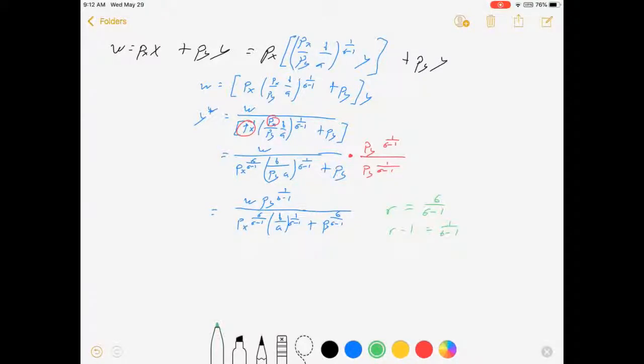And so what's that going to look like in our equation: w·py^(r-1) over px^r times (b/a)^(r-1) plus py^r. Now, that's not necessary. It does make it a little nicer to look at, but then you have to remember this intermediate green step that went into all of those exponents. So that's up to you.